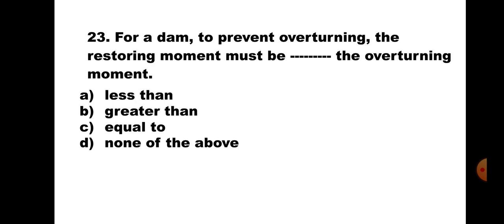Question number 23: For a dam to prevent overturning, the restoring moment must be dash dash the overturning moment. A. less than, B. greater than, C. equal to, D. none of the above. Overturning is caused by total water pressure at the toe. The restoring moment is due to the self weight W into (B minus X bar). For the dam not to overturn, the restoring moment must be greater than the overturning moment. Correct answer is B. Greater than.